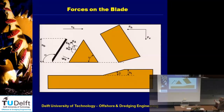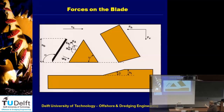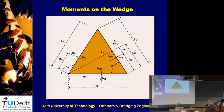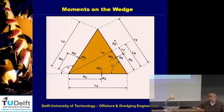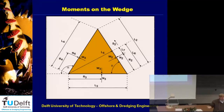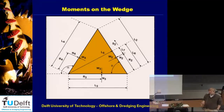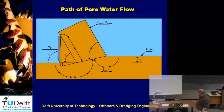Forces on the blade are always opposite to the forces on the wedge. The moments are important to determine how much of the friction is mobilized. If it's fully mobilized — 100 percent — I don't really need the moment equation. But as long as it's not fully mobilized, I need a third equation because my delta is one of the unknowns, and the number of equations must equal the number of unknowns.